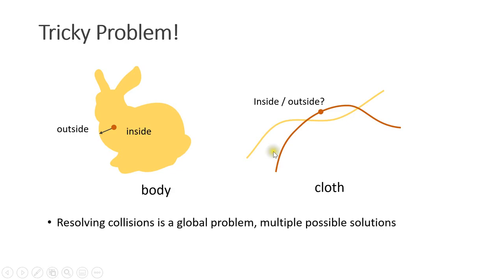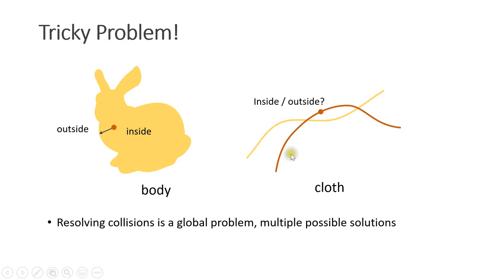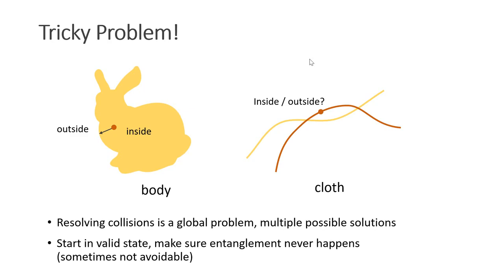Now for cloth, the situation is different. There is no inside and no outside. Resolving collisions is a global problem because there are multiple solutions. We can, for instance, move this piece of cloth completely down or completely up to resolve the collision. One solution is to start in a valid state and make sure that no entanglements ever happen. Sometimes, however, this is not avoidable. Even though I don't have the perfect solution for cloth self-collision handling, I will give you five tricks that make it work very well.